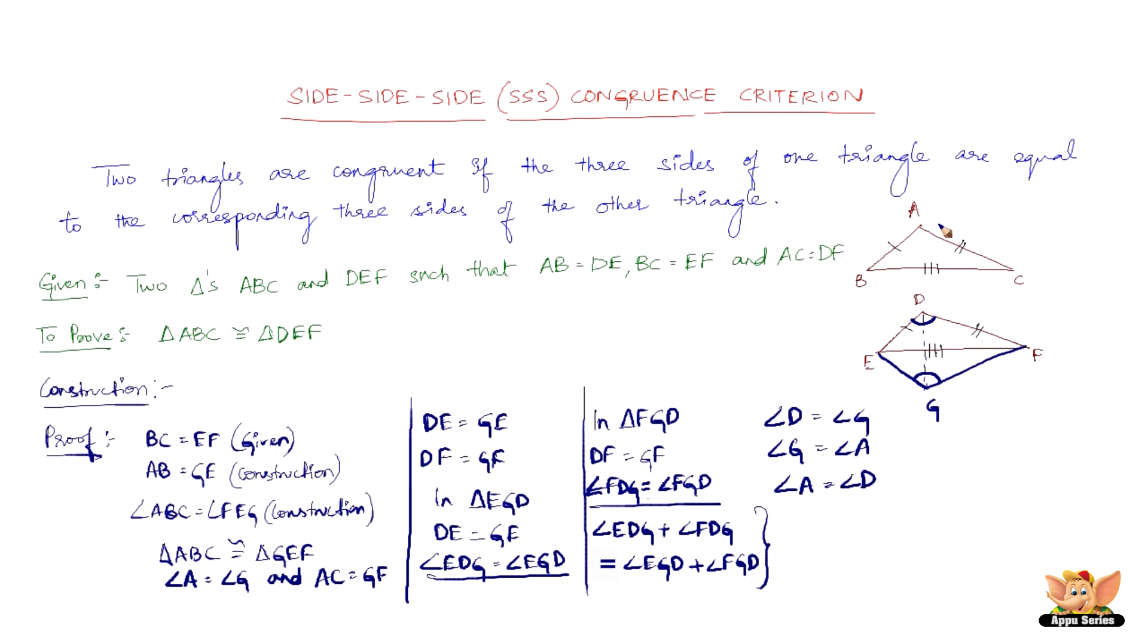Thus in triangles ABC and DEF we have AB equals DE, angle A equals angle D, AC equals DF.